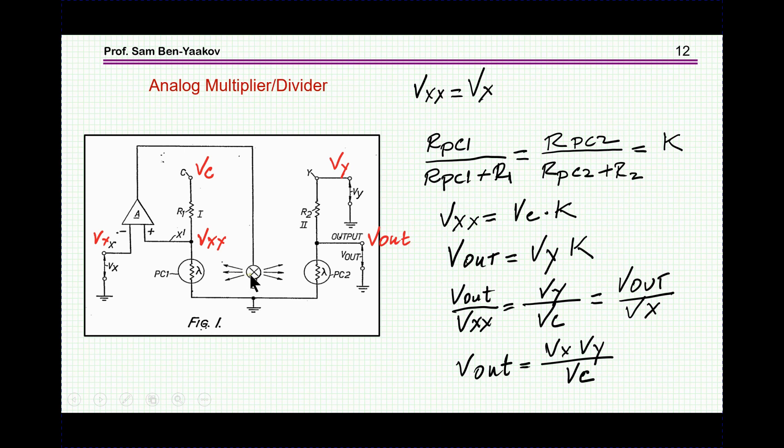Since these are following each other, then the divider from here to here and the divider from here to here, these are the expressions for the two dividers, is the same. And then we have that Vxx is equal to Vc times this divider, and also Vout is Vy times the divider.